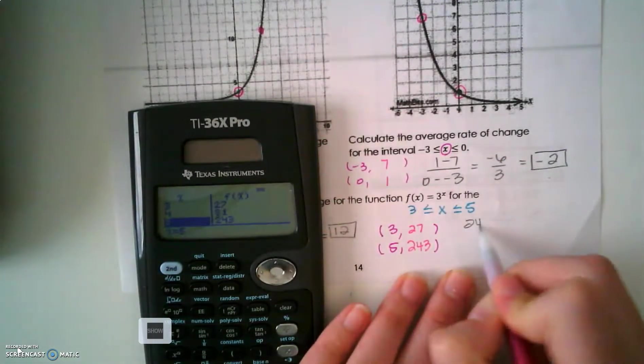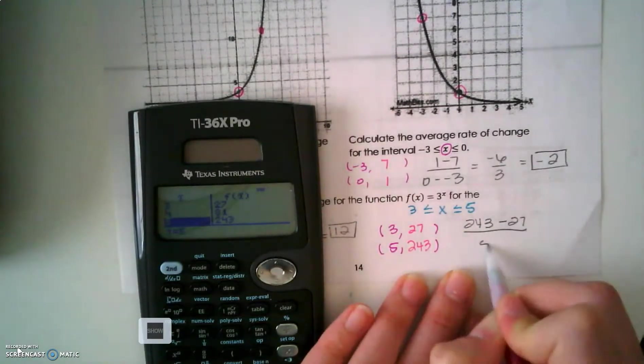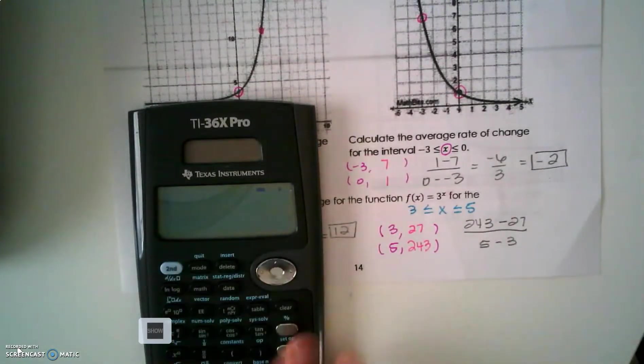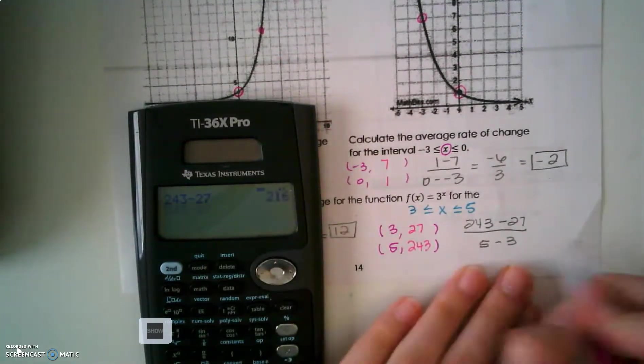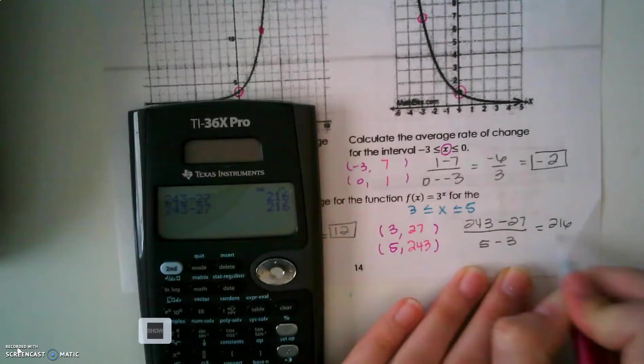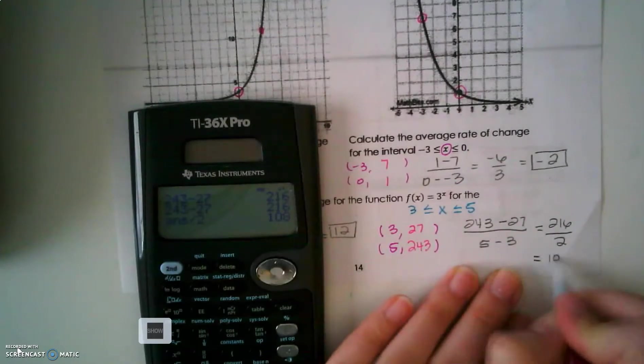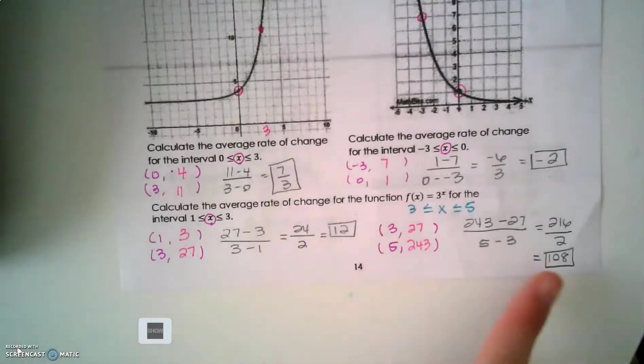So, let's find our slope. So, we have 243 minus 27 all over 5 minus 3. So, I'm going to use my calculator for this one. So, 243 minus 27. So, I get 216 over 2. So, I'll divide by 2, and I get 108. 108. So, before I had 12, and now I have 108.